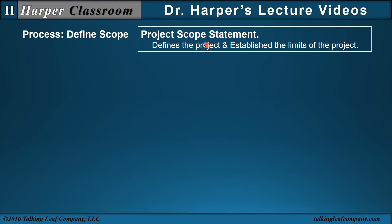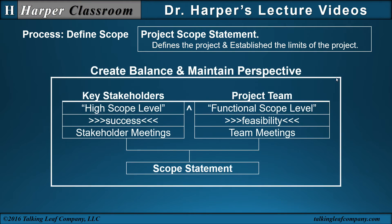The Project Scope Statement defines the project and establishes the limits of the project. In developing a Scope Statement, the project manager must create a balance between the key stakeholders in stakeholder meetings and the project team in team meetings. In the stakeholder meetings, considered high scope level, the focus is on success of the project. In the team meetings, considered a functional scope level, the focus is on feasibility.